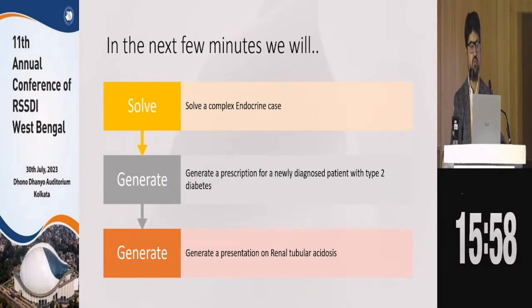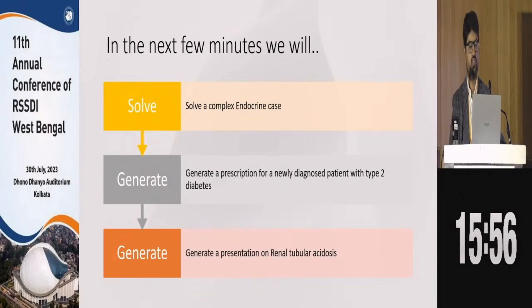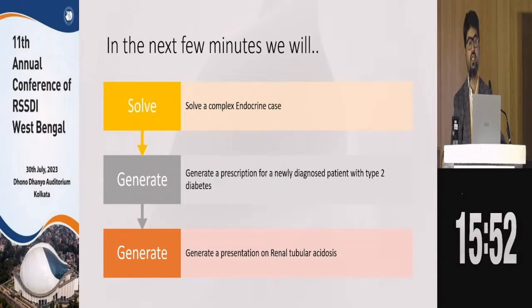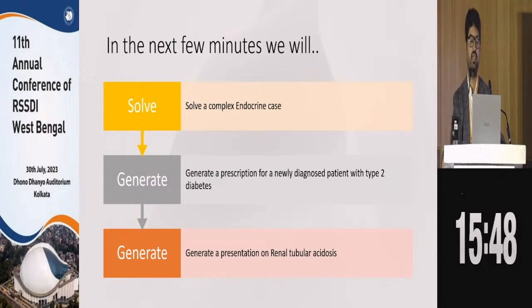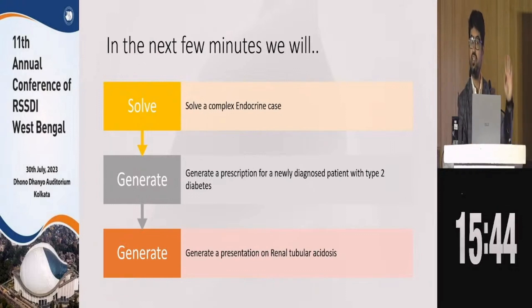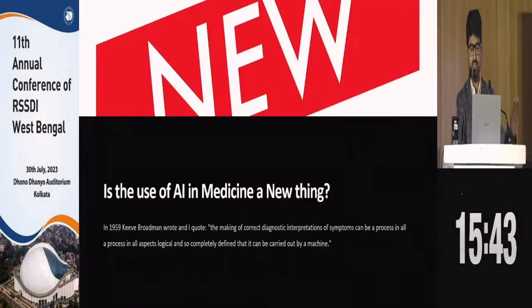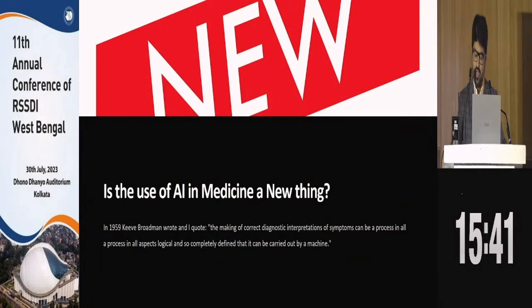In the next few minutes we'll do three things: we'll solve a complex endocrine case, we'll generate a prescription for a newly diagnosed patient with type 2 diabetes, and we'll generate a presentation on a random topic — renal tubular acidosis. We'll actually generate a presentation right here.